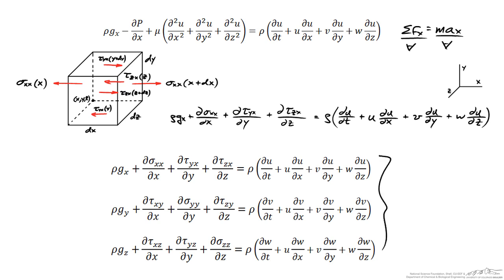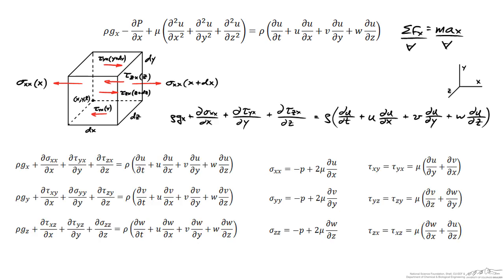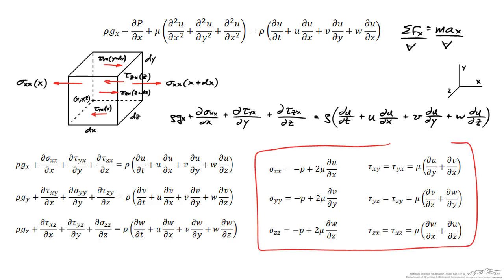To get from these equations to the Navier-Stokes equations, we need a way to relate the normal and shear stresses to the viscosity of the fluid and the velocity profiles. This is done using the constitutive relations for a Newtonian fluid, which we won't derive here, but if we accept them as true, it becomes a series of algebraic manipulations to arrive at the Navier-Stokes equation.